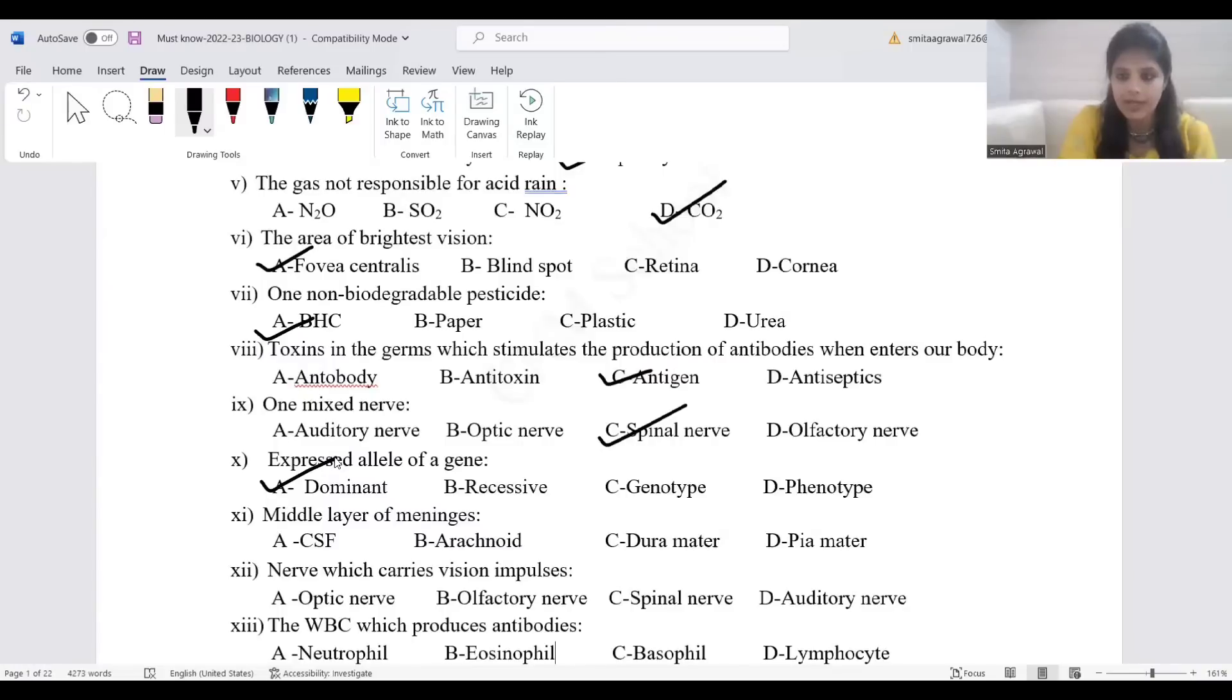Middle layer of meninges, the correct answer is arachnoid. There are three meninges around the brain: dura mater, arachnoid, pia mater. CSF is the cerebrospinal fluid. Nerve which carries vision, vision means optic, so correct answer is optic nerve.